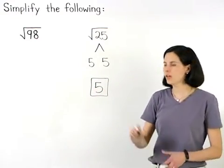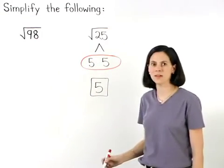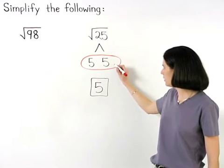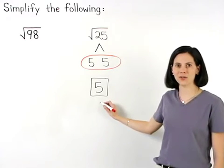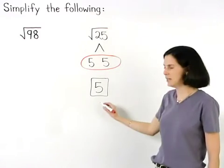In other words, since we have a pair of factors that are the same, one of these factors, in this case 5, can come out of the radical. So the square root of 25 is 5.